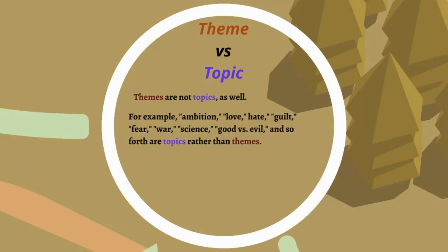Themes are not topics. Ambition is not a theme. Love is not a theme. Hate is not a theme. Good versus evil is not a theme. Guilt, fear, war — themes are never just one word. Themes are specific ideas, concepts about general topics. What is Death Race trying to say about terrorism? What is it trying to say about greed or corruption? Themes are complete ideas — that's the key issue.